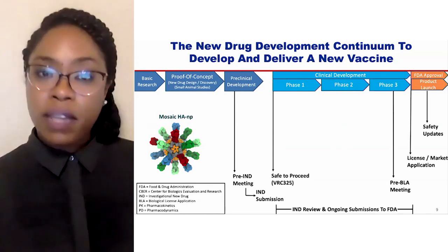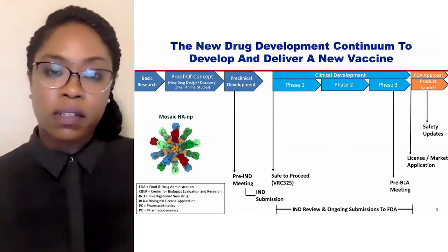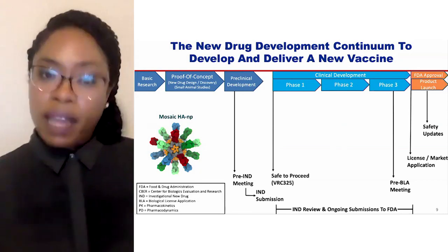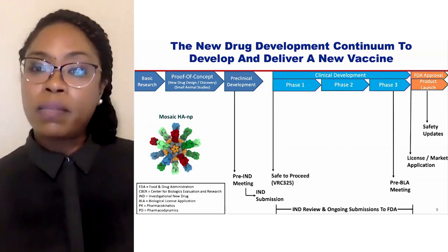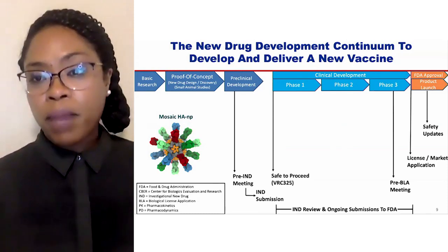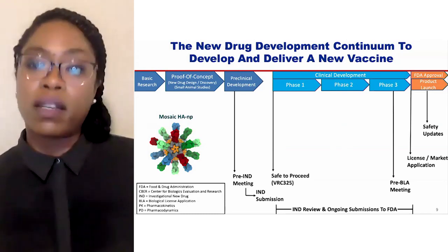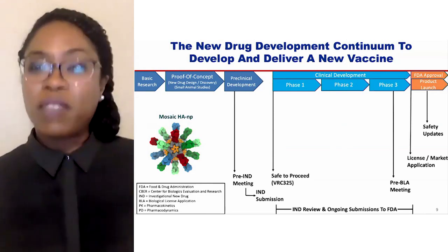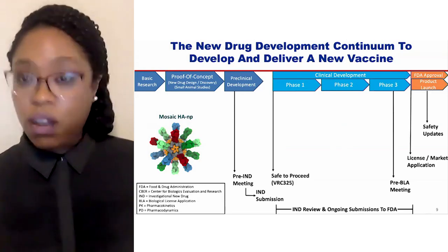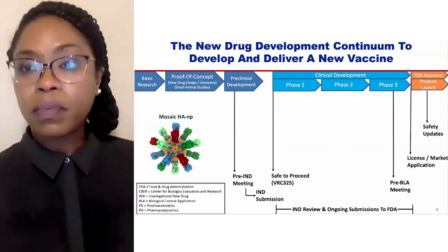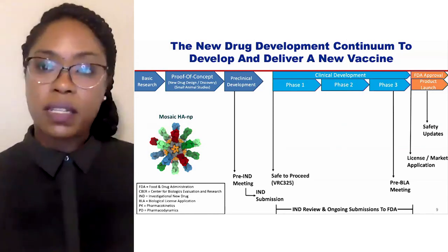If we get a safe-to-proceed on the IND submission — and in this case I've put the name of the clinical trial now underway for this nanoparticle, called VRC325 — we can proceed into this first-in-human clinical trial. With time, we aim to put in a pre-Biologics License Application meeting to understand if we're meeting all criteria to get this to market. If so, we can eventually put in a Biologics License Application, allowing distribution of this drug to the public. There will be continued safety updates throughout to ensure safety all the way to the end of this continuum.